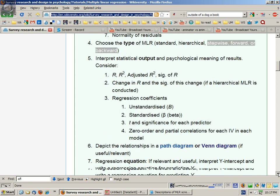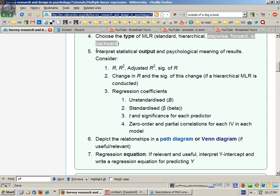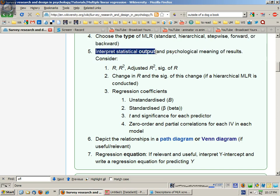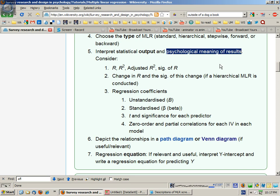The fifth step is to interpret the statistical output and try to make psychological meaning and sense of the results. What causes what and how much of an impact does it have on explaining the dependent variable?